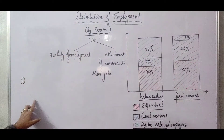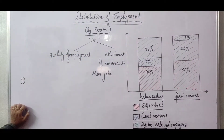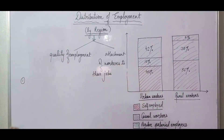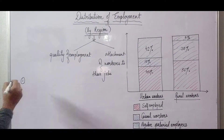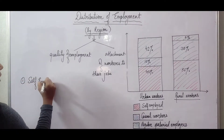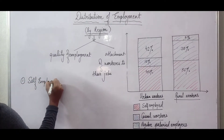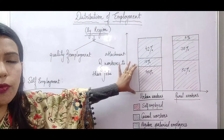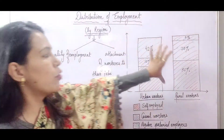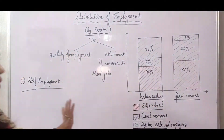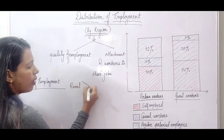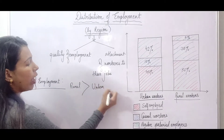As we have seen by gender, self-employment is the major source of livelihood in both urban areas and rural areas. We can clearly see that in both urban and rural areas the major source of employment is self-employment. However, you can clearly see the difference: in rural areas the self-employment rate is more than in urban areas.